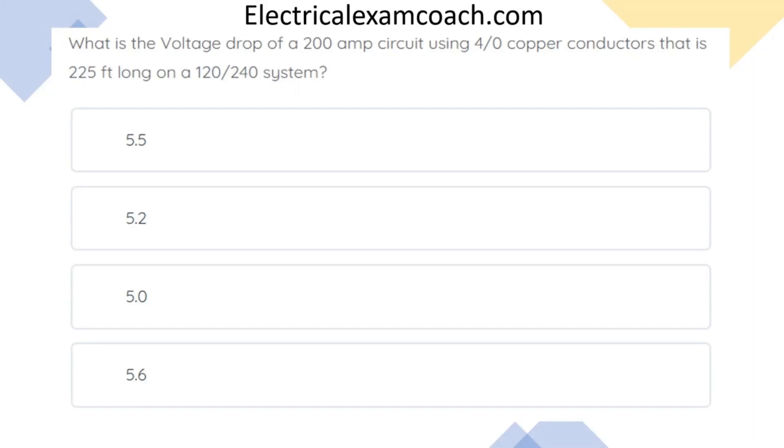What is the voltage drop of a 200-amp circuit using 4-aught copper conductors that is 225 feet long on a 120-240-volt system? And the correct answer is A, 5.5.